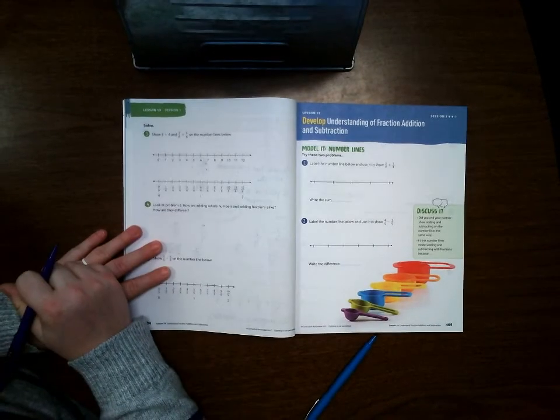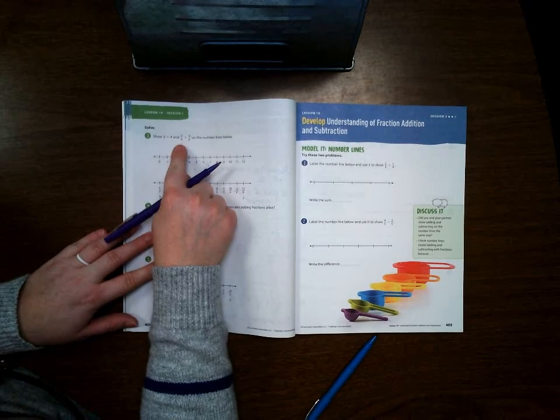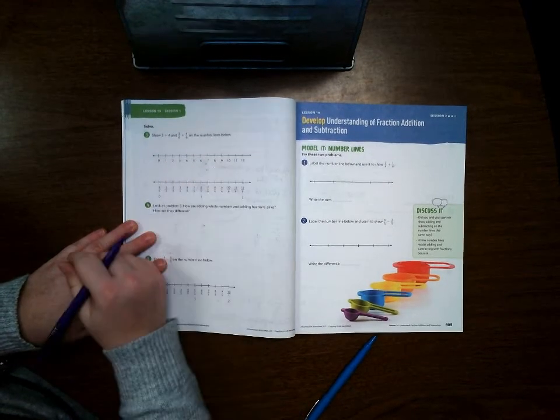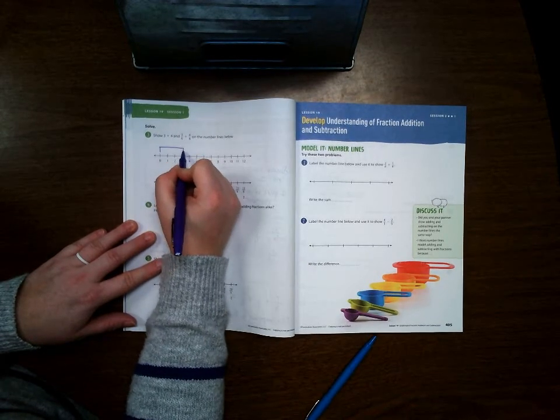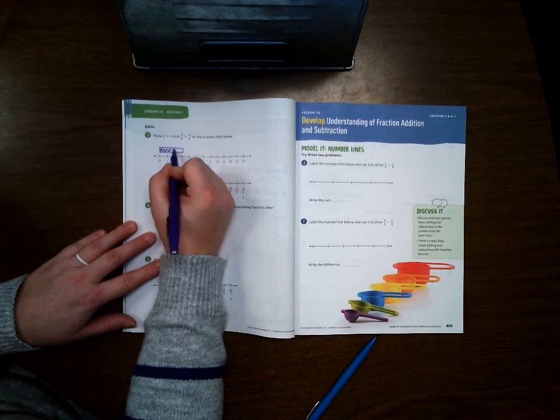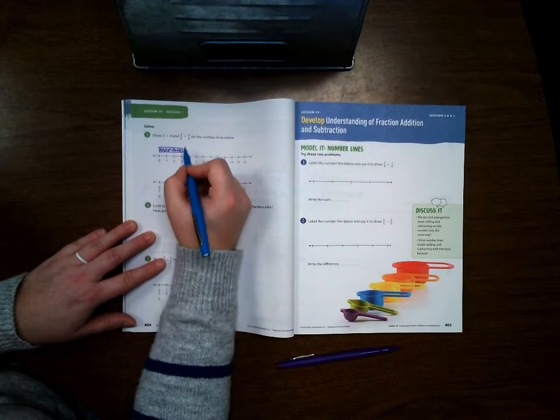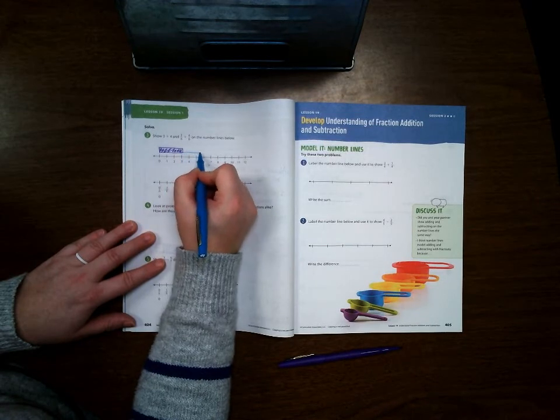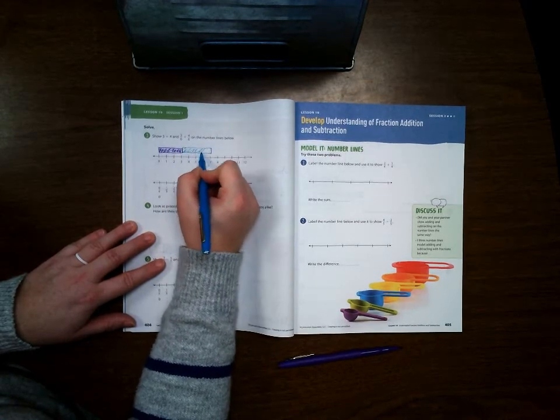Okay, on 404 it says show 3 plus 4 and 3/6 plus 4/6 on the number lines below. So first we'll do 3, and then we'll add 4 more: 1, 2, 3, 4. And we see that we get 7.